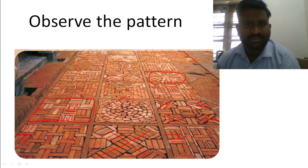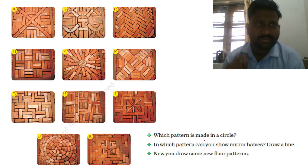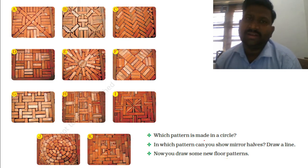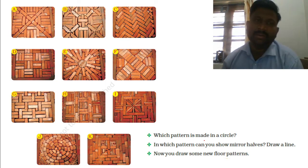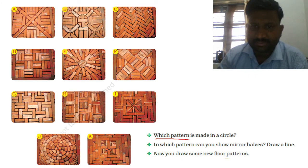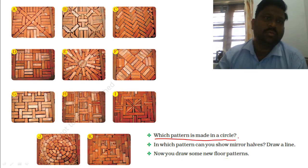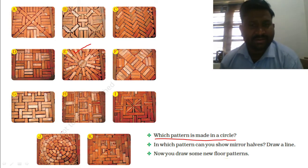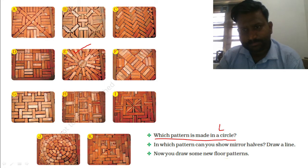There will be some questions depending on the designs A, B, C, D, E, F, G, H, I, J, K. The question is: which pattern is made in a circle? You can clearly see that E is made in a circle, and J is also made in a circle. So the answer is E and J.